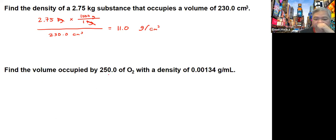Next problem: find the volume occupied by 250 grams of oxygen with a density of 0.00134 grams per milliliter. Using the definition, density equals mass over volume. The one we need is volume, so rearranging this equation, V equals m over d.